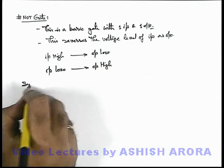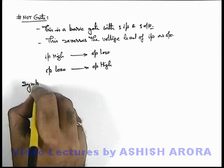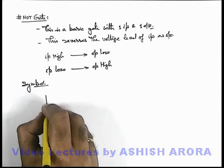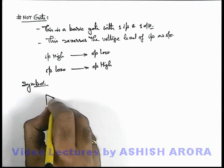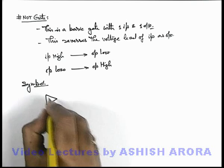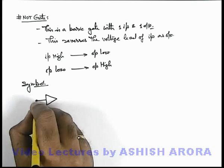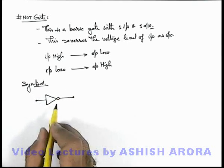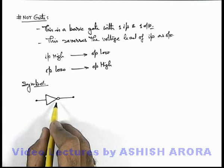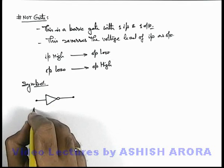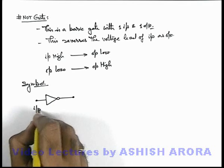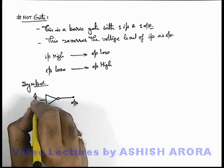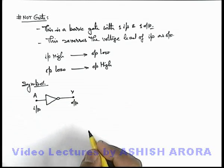The symbol we use for notation of a NOT gate is drawn like a triangle with a bubble at one vertex of the triangle. Here, if this is considered as the input end, this is the output end. If input is named as A, output is Y.